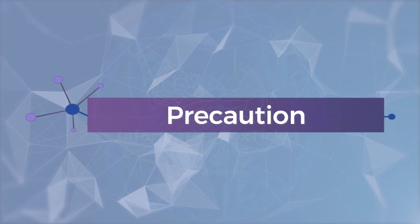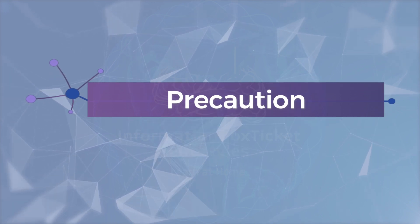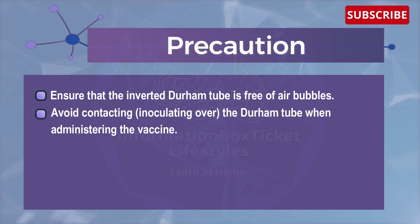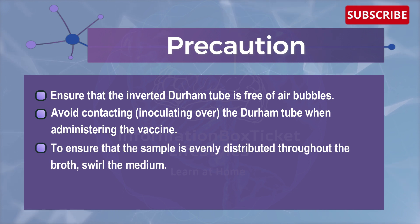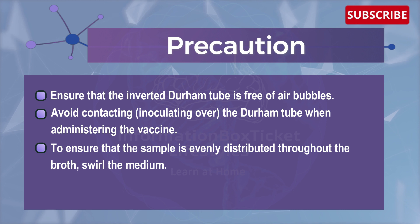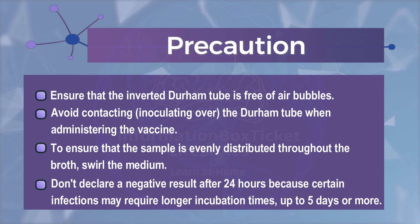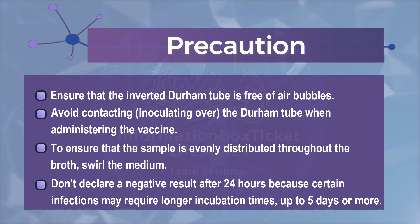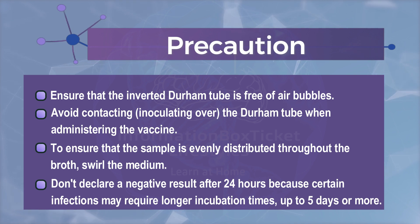Now let's head to the precautions. Ensure that the inverted Durham tube is free of air bubbles before use. Avoid inoculating over the Durham tube. Swirl the media to ensure that the sample is evenly distributed throughout the broth. Do not declare a negative result after only 24 hours, because certain organisms may require longer incubation times — up to 5 days or more.